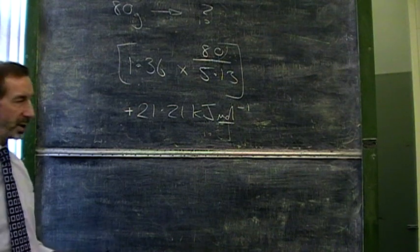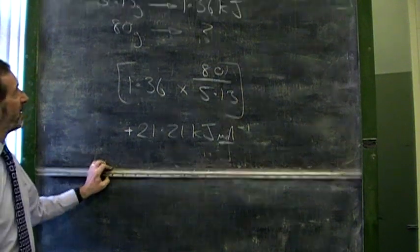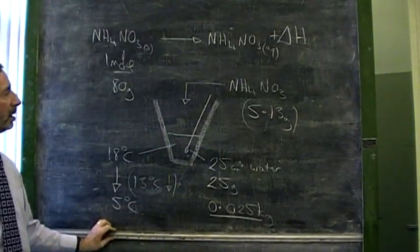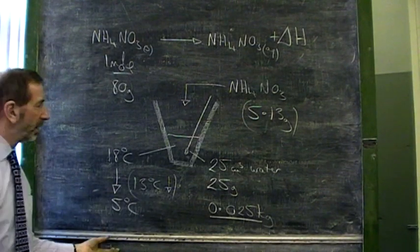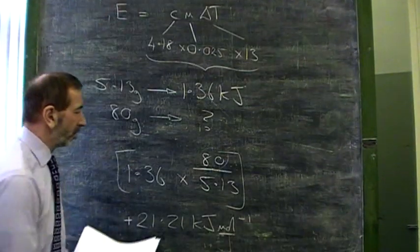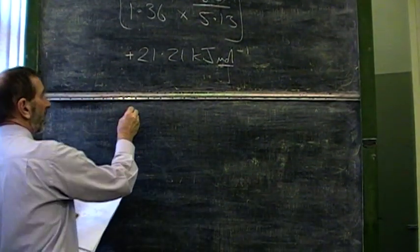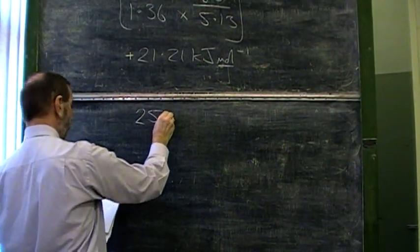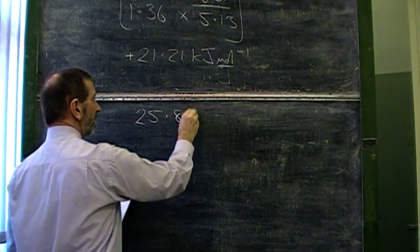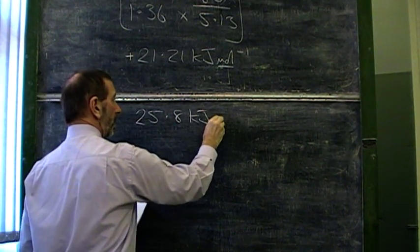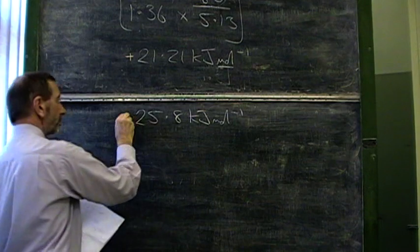A couple of other points. How does this value from the experiment compare with a value from a data book? Now, you won't find this value in the higher data book, but it is a value which is available. The correct value is 25.8 kilojoules per mole. Why the difference?